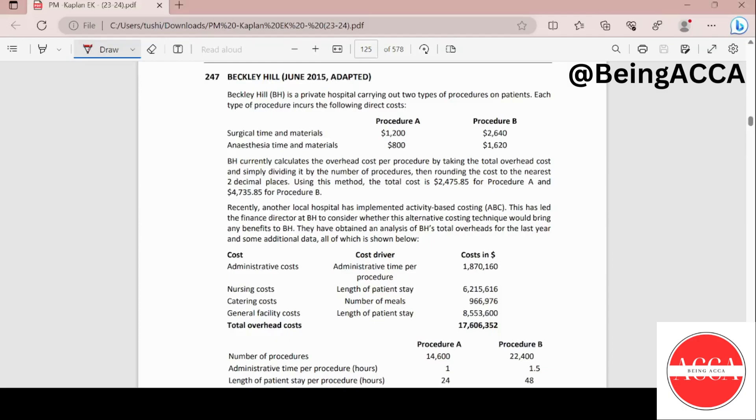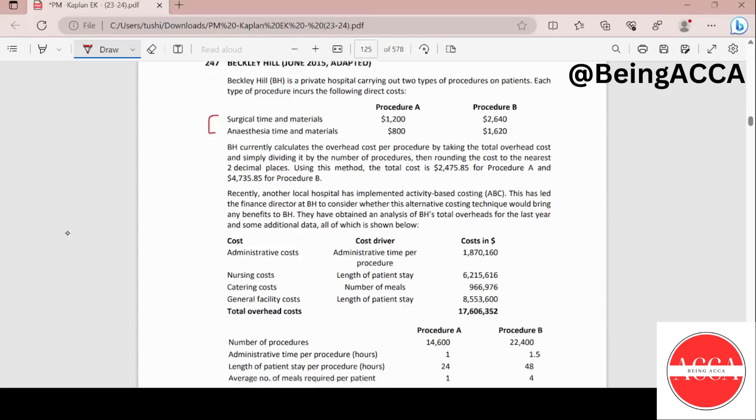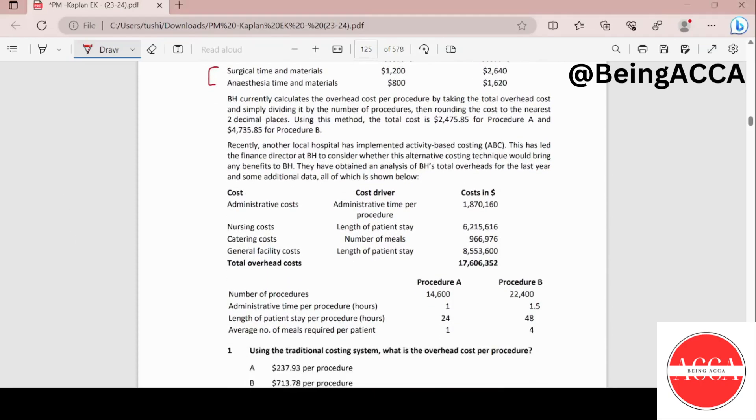Beckley Hill is a private hospital carrying out two types of procedures on patients. Each type of procedure includes direct costs given to us for both procedures. BH currently calculates the total overhead cost per procedure by taking the total overhead cost and simply dividing it by the number of procedures, then rounding the cost to the nearest two decimal places.